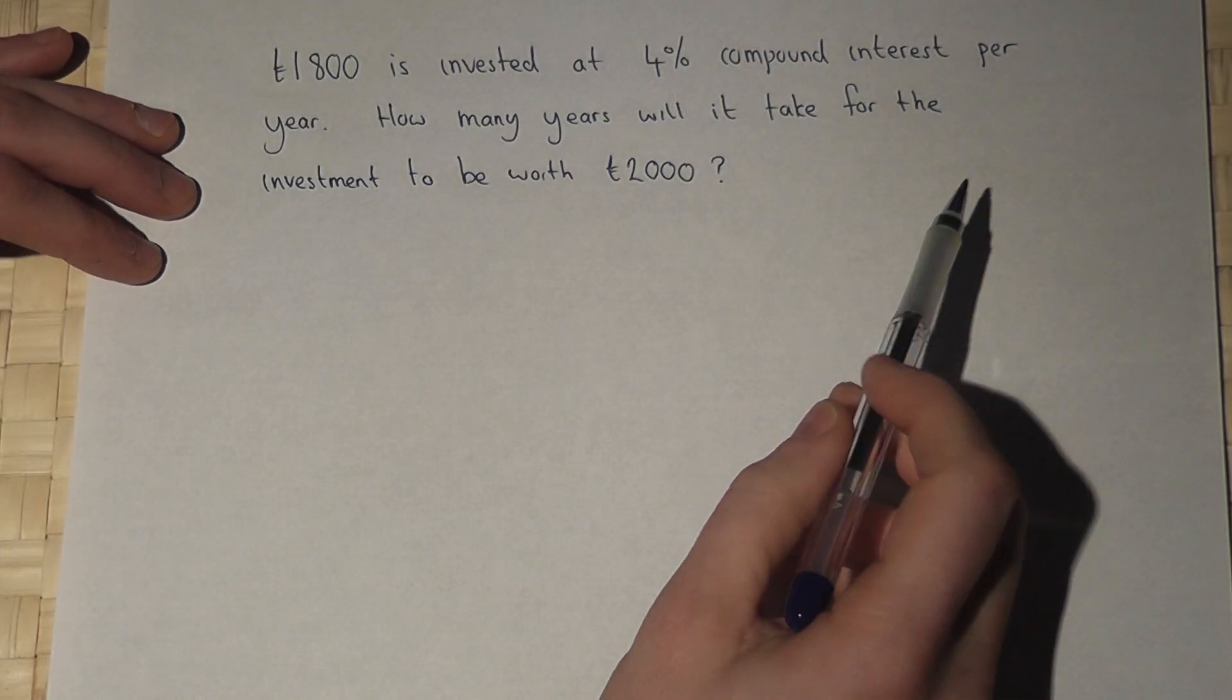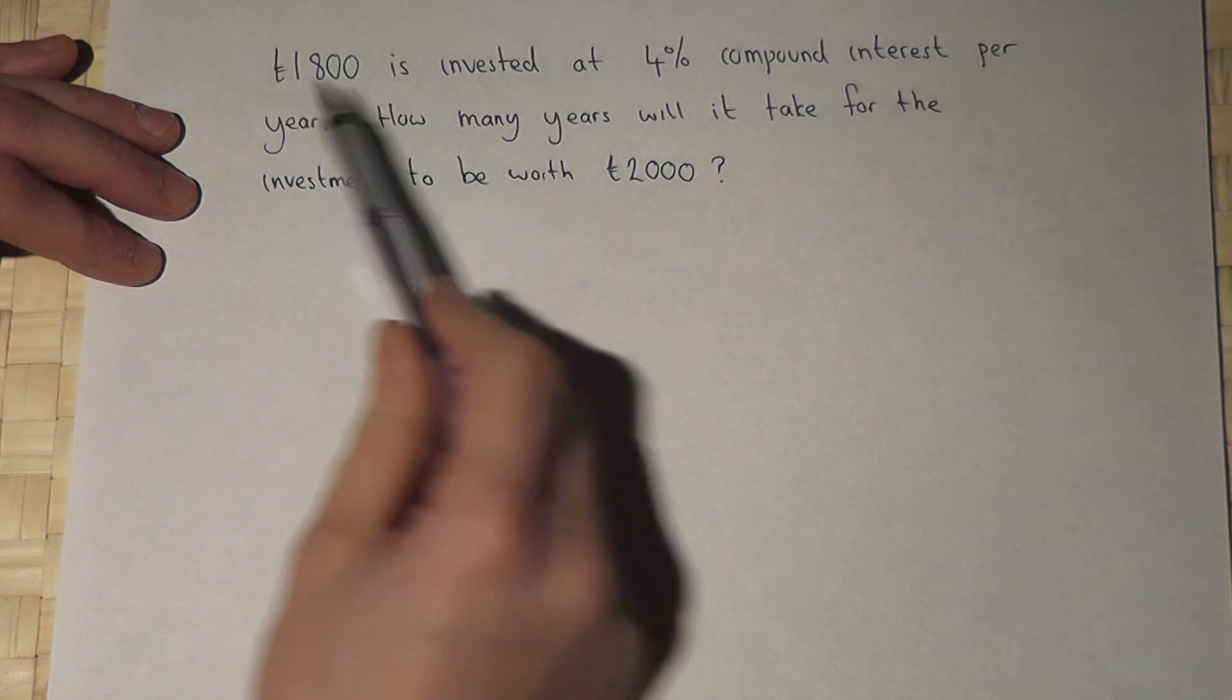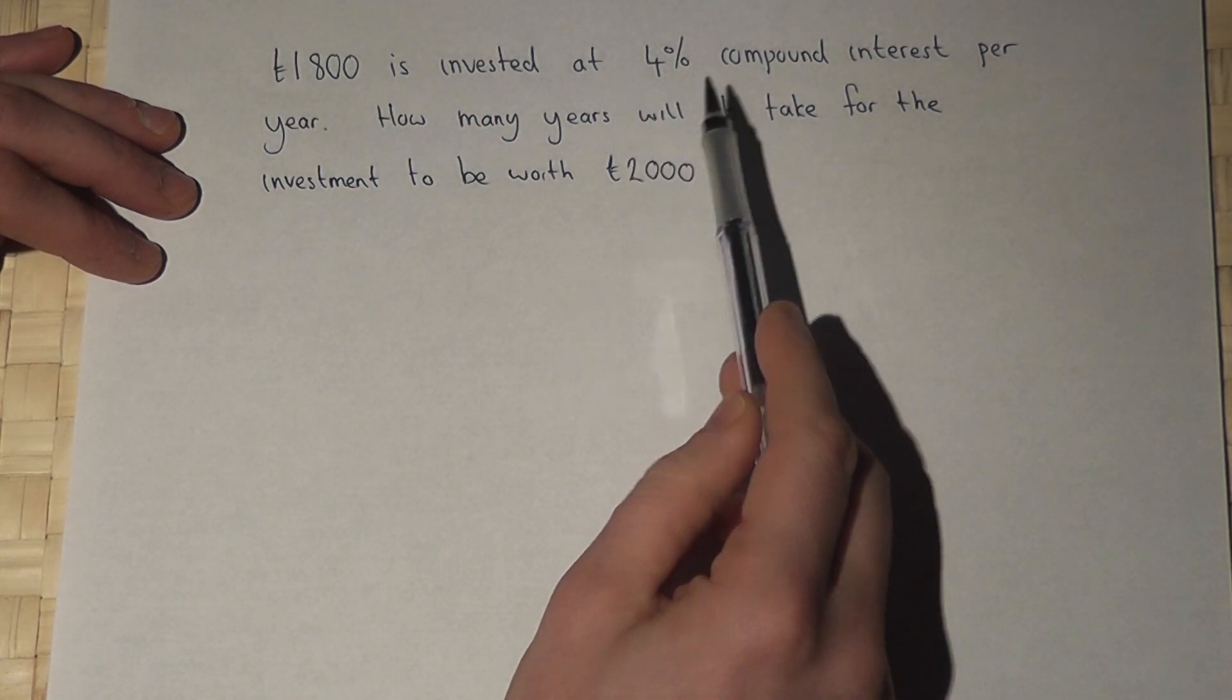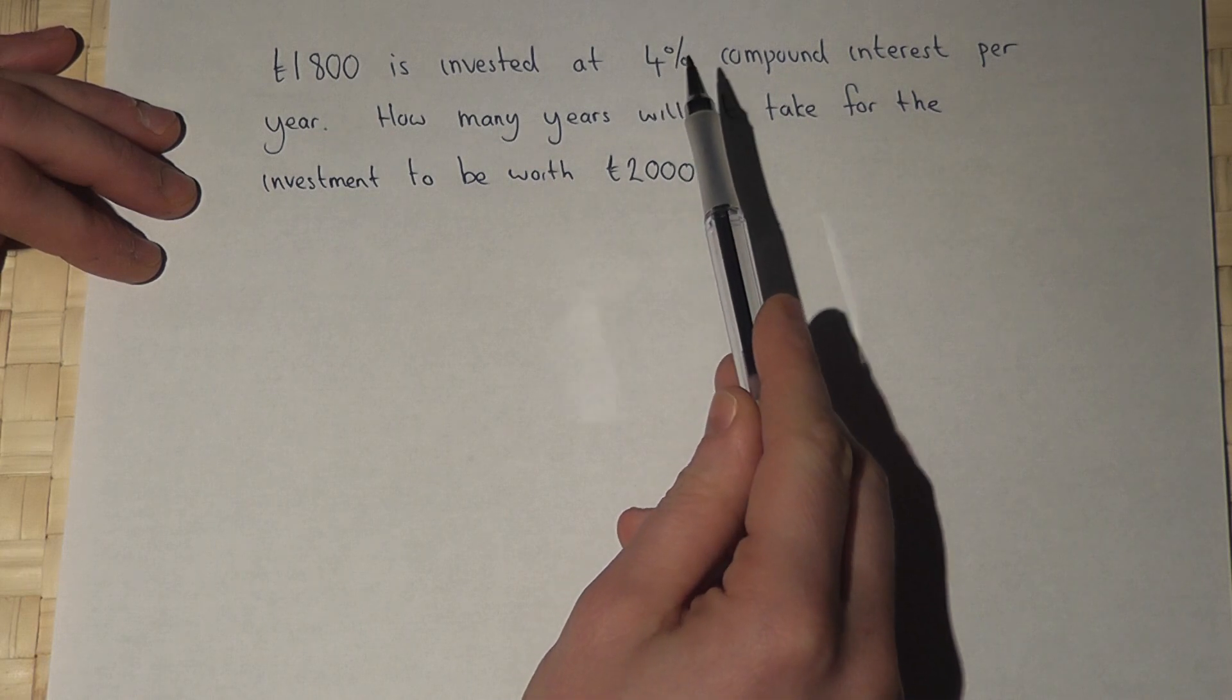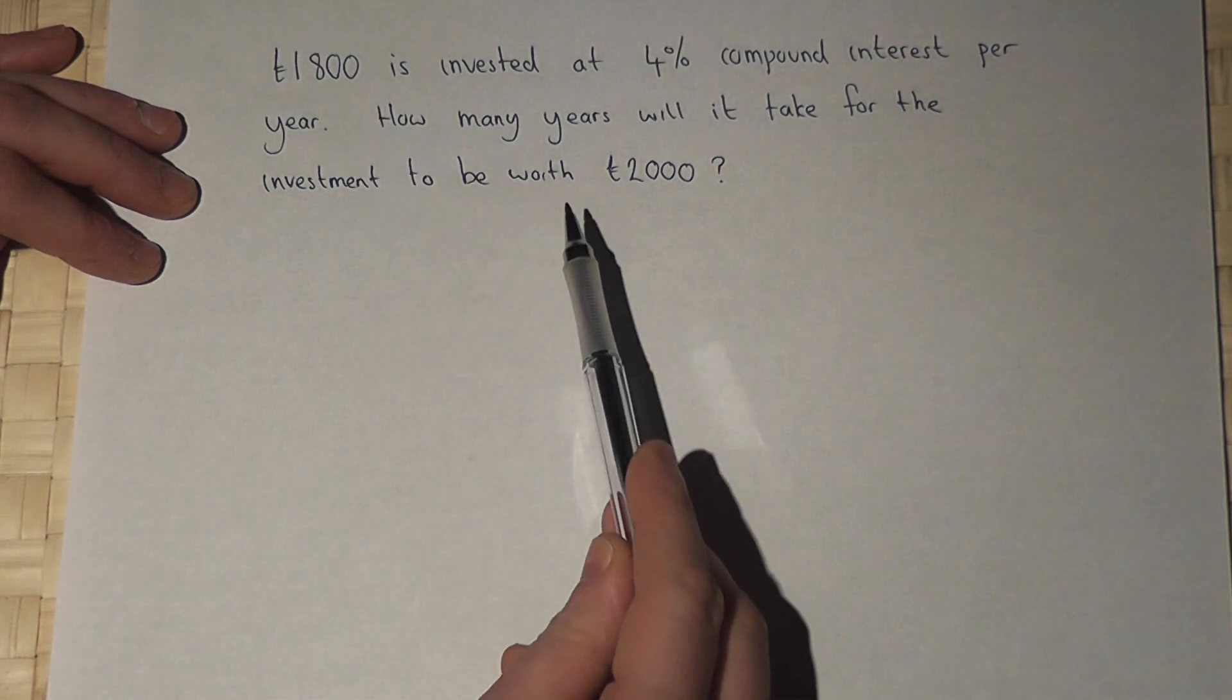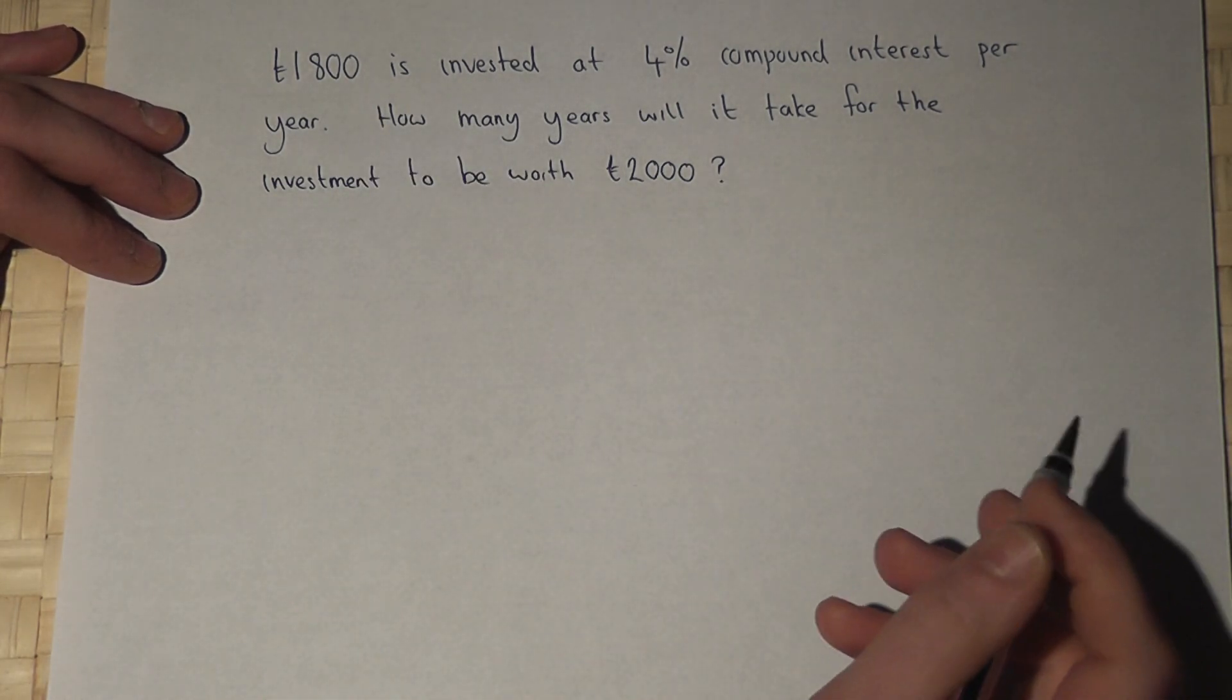In this example, somebody invests £1,800 and each year this amount will increase by 4%. The question is how many years will it be before the amount rises to £2,000.